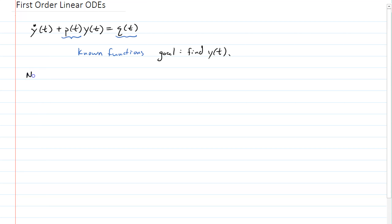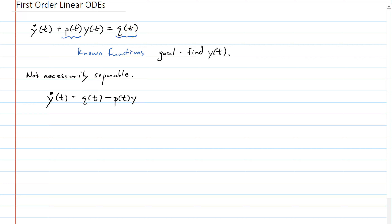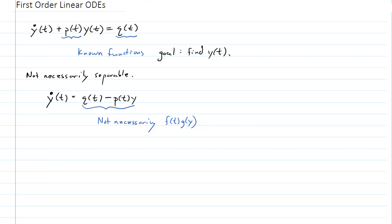Notice that this is not necessarily separable. We can write this equation as y-dot of t equals q of t minus p of t times y of t, and it doesn't necessarily separate if that q function is not zero. So this is not necessarily of the form f of t times g of y. If the t-dependence and the y-dependence factorized, I could separate y from t and use integration by separation of variables, but you can't do that in general here. So how can you solve these in general?